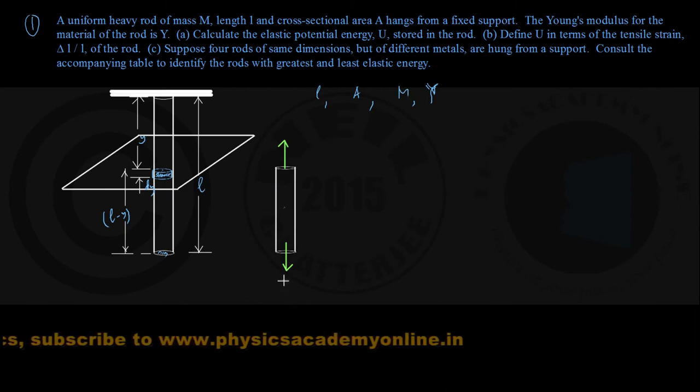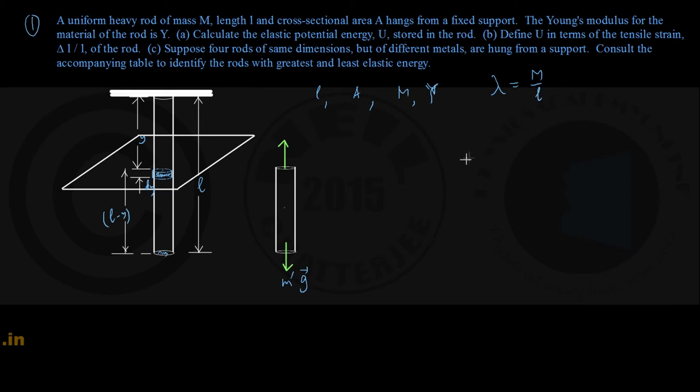So, if the mass of this part is taken to be M dash, the corresponding force of gravity is M dash G. You can find out this M dash here. Well, as they have mentioned the uniform heavy rod of mass M and length L, the linear mass density lambda of the rod comes out to be M by L.